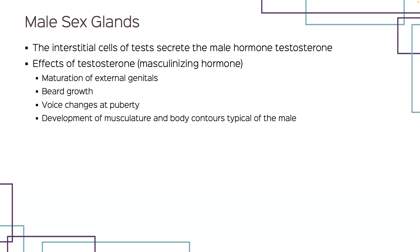The cells of the testes produce the male sex cells called sperm. Other cells within the testes — the male reproductive ducts and glands — produce the liquid portion of the male reproductive fluid called semen. The interstitial cells in the testes secrete the male sex hormone testosterone directly into the blood, making them the male endocrine glands. In addition to stimulating sperm production, testosterone — the masculinizing hormone — is responsible for the maturation of the external genitals, beard growth, changes in voice at puberty, and for the muscular development and body contours typical of males.